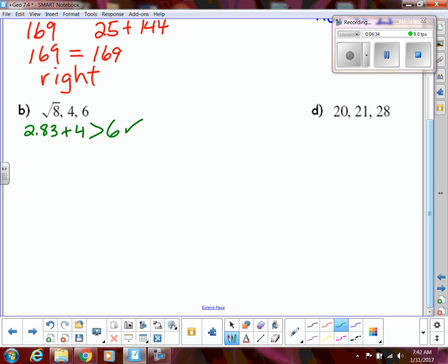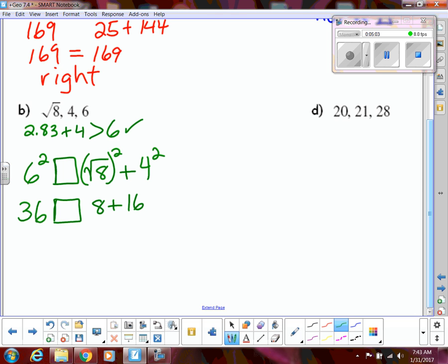So, now we can do the Pythagorean theorem. And I'm going to put the c squared on the left though. So, 6 is my largest side. So, 6 squared and then I don't know. And we're going to do the square root of 8 squared. Notice that I'm not using the approximation in the Pythagorean theorem part. Because we want exact answers. So, remember, square root of 8 squared. The square and the square root cancel. So, that's just going to be 8 and then plus 16. So, that's going to be 36 and 8 plus 16 is 24. So, our c squared is larger than our a squared plus b squared. So, that must mean that this is obtuse.